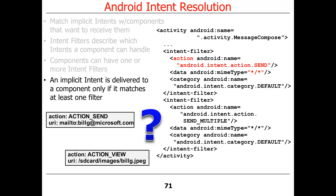When an intent is sent, the Android Activity Manager Service determines which things match. For example, sending an action send intent with a URI to a particular person would match this filter. But an action view intent, which might be used to view an image, would not match. So the message compose activity won't be selected to view an image, whereas action send would match. That's part of how the Android system does its disambiguation.